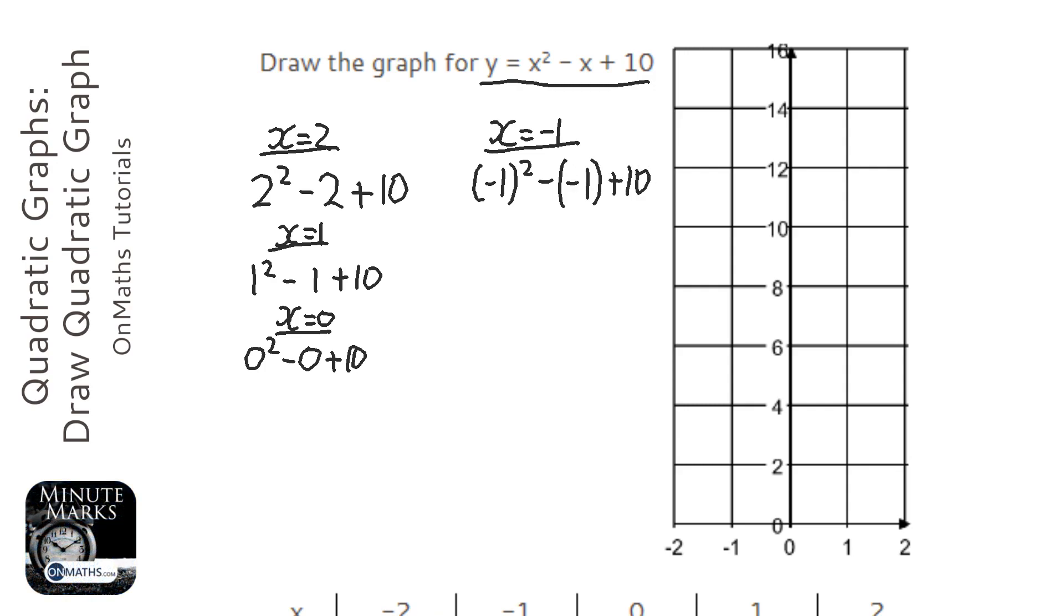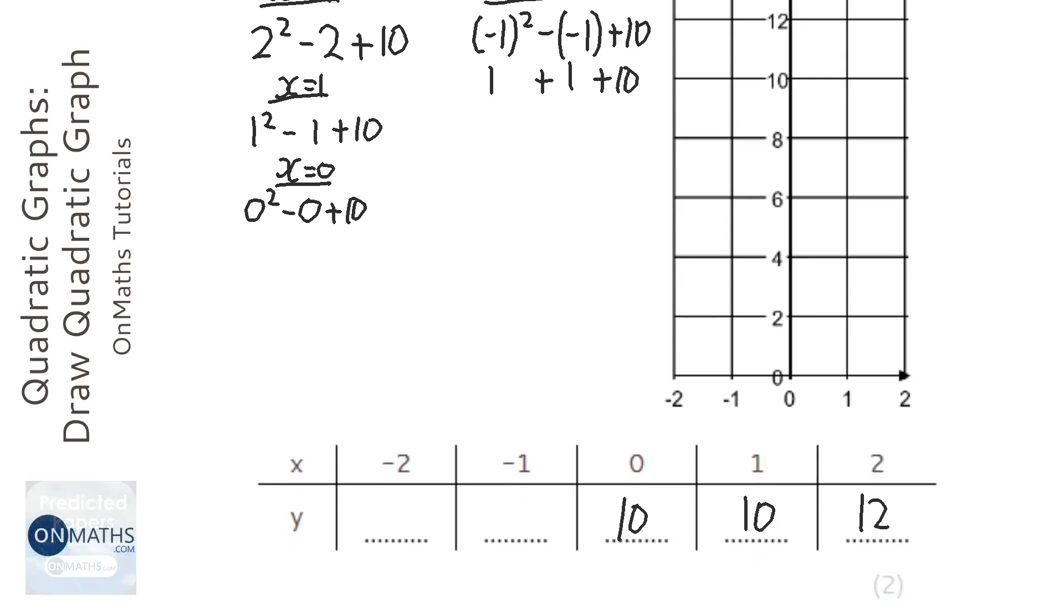So minus 1 squared is 1, and if you don't put it into brackets, the calculator will assume that it's minus 1, because it will square the 1 first and then put a minus before it. Minus minus minus makes it a plus, so that's going to be 12.